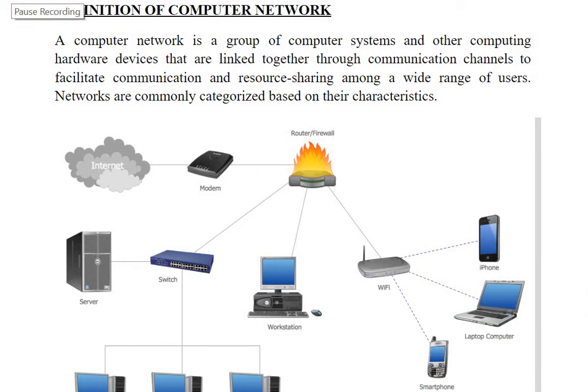Hello everyone, welcome to Easy Explanation. In this video tutorial, I will be covering the definition of computer network and application areas of computer network. A computer network is a group of computer systems and other computing hardware devices that are linked together through communication channels to facilitate communication and resource sharing among a wide range of users.